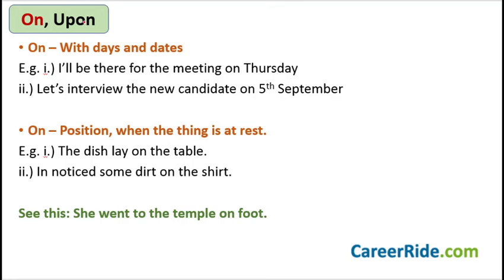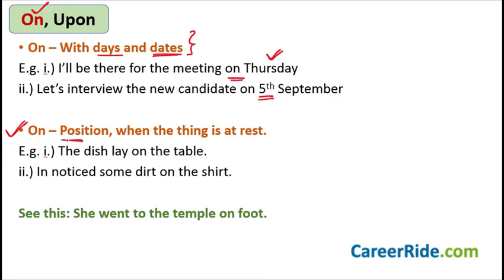Now let's move on to the next set: 'on' and 'upon.' We saw that whenever we are talking about days and dates, we use the preposition 'on' with them — but if it is a month or year, we use 'in.' For example: 'I will be there for the meeting on Thursday' because Thursday is a day. 'Let's interview the new candidate on 5th September' because there is a specific date given.